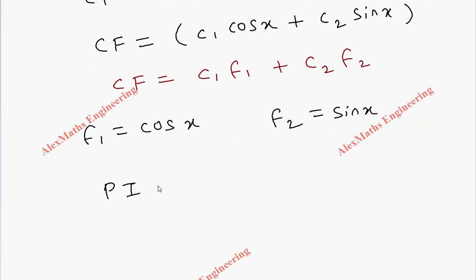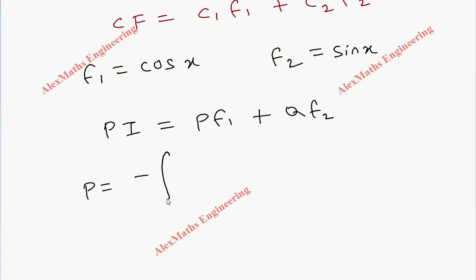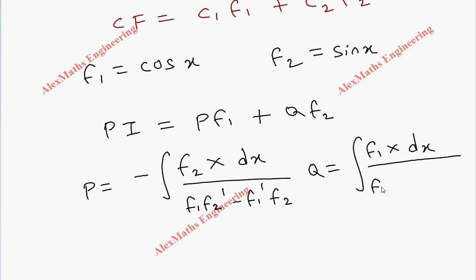Using this we can write the particular integral as Pf₁ + Qf₂, where P = -∫(f₂X dx)/(f₁f₂' - f₁'f₂) and Q = ∫(f₁X dx)/(f₁f₂' - f₁'f₂).